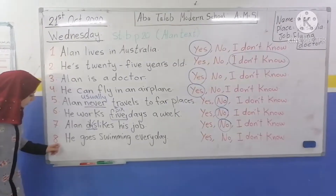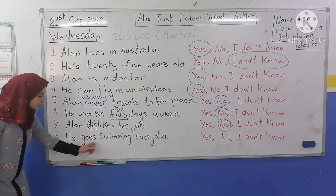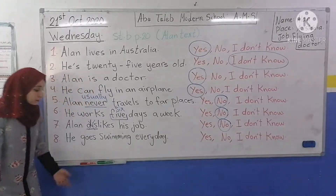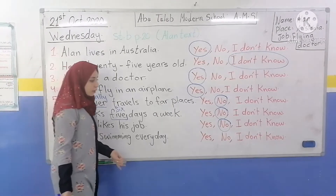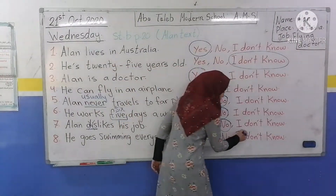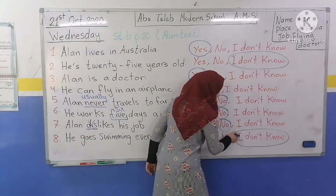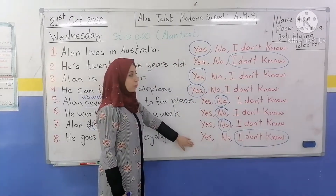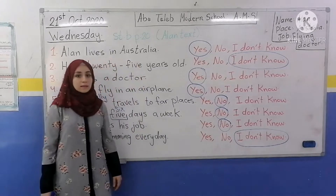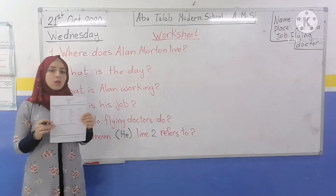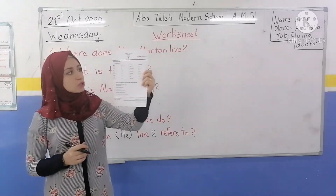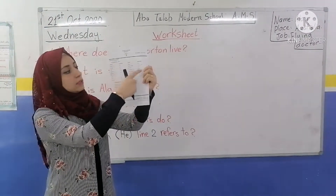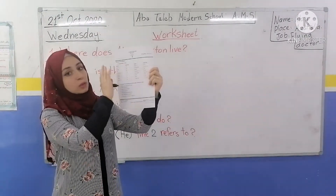Number 8: He goes swimming every day? We don't know. Circle around I don't know. Please write down the answers and circle around the correct answer. We have a worksheet with a table of meanings — please memorize all the meanings.